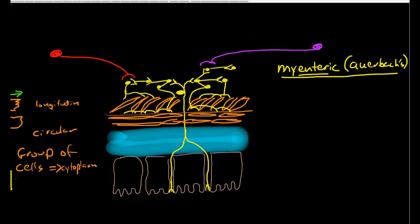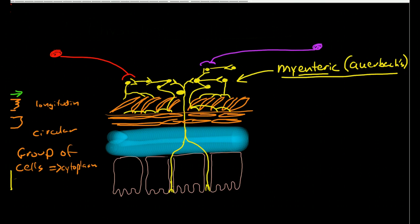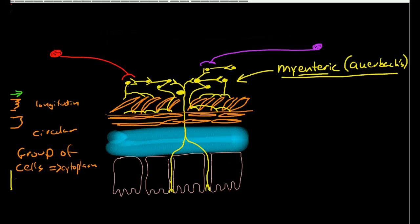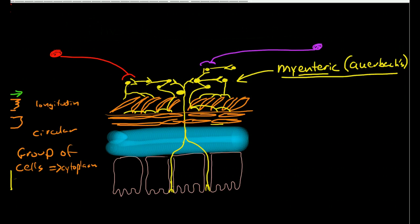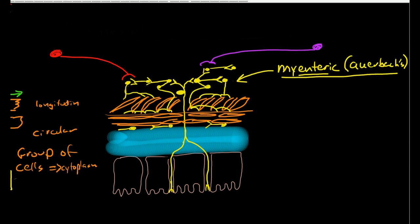This is my drawing of the myenteric plexus. It's these interconnections between neurons just above the muscularis of the gut. There is a submucosal plexus as well down here but I'm not really talking about that during this discussion. It's not really significantly involved in peristalsis.